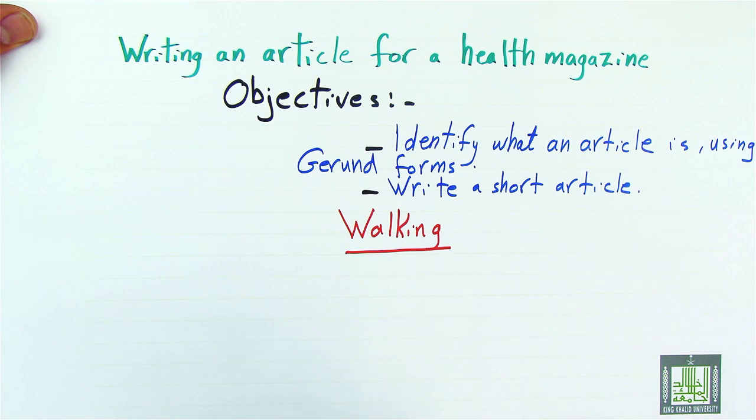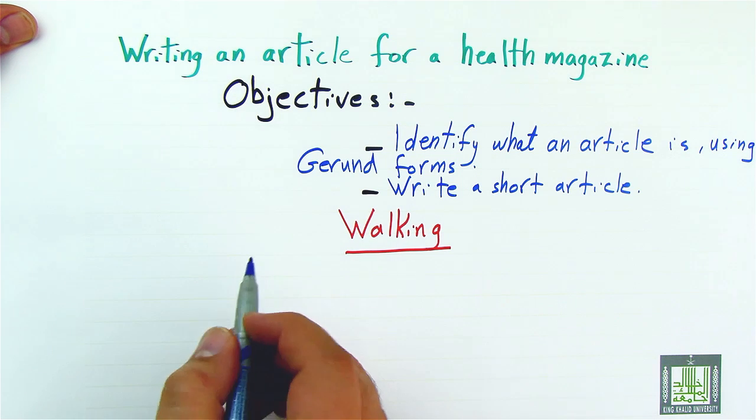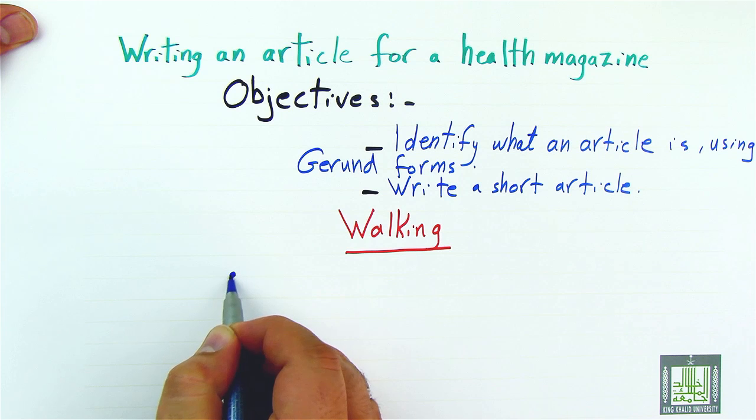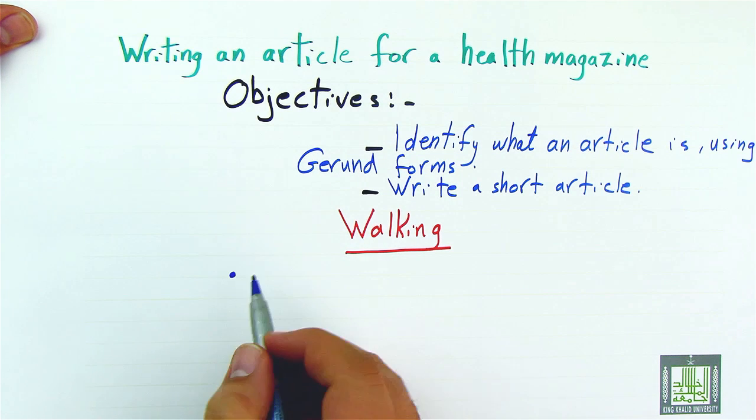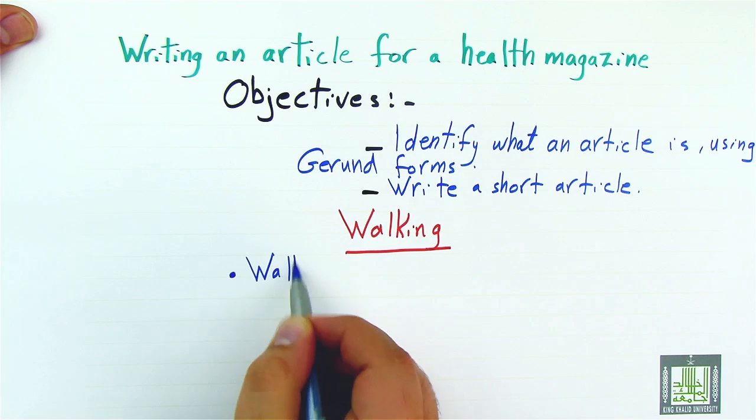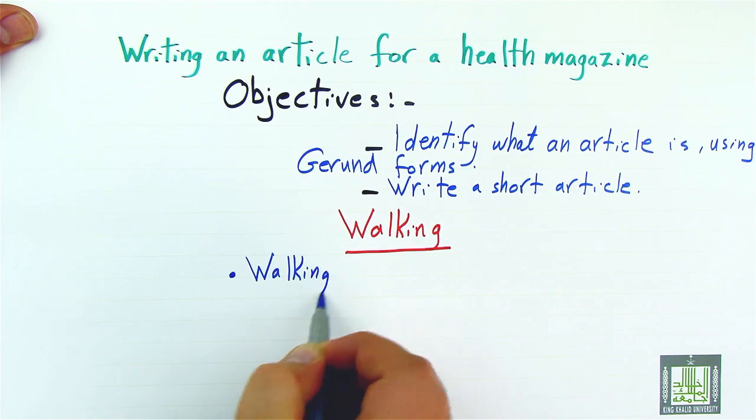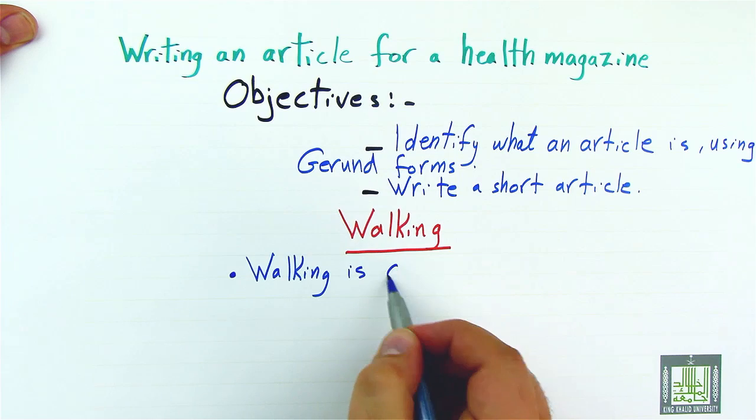When we write a topic, this is the title of course. And then we will start writing that article by stating first the main idea that we want to talk about. For example, let's say walking is cheap.